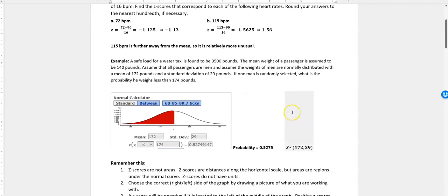Let's look at an example where we have a safe load for a water taxi. Why would somebody ever ask this question? The mean weight of a passenger is assumed to be 140 pounds. Maybe normally on a water taxi, you might have some children that weigh 50 pounds and some women that weigh less and some men that weigh more. People of all different sizes. But if you put all men on there, statistically, you're more likely to get a heavier weight of people. You have to be careful you don't overload a water taxi.